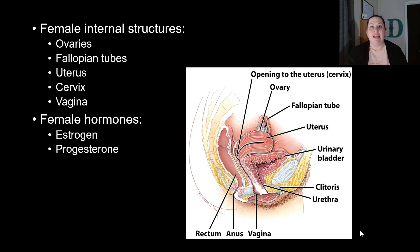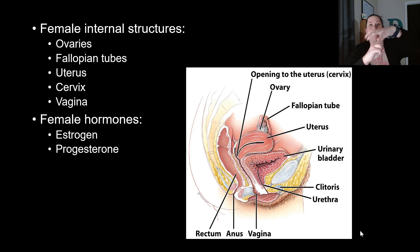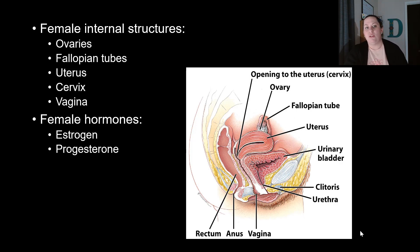Moving on to the internal structures of the female, we have the ovaries. The ovaries are the organs that produce the egg and several hormones. They are considered the female gonads. The fallopian tubes connect to and siphon the egg released by the ovary, directing it toward the uterus. They are not actually connected to the ovary — just next to it — so when the egg is released, the fallopian tube sucks it up like a vacuum and sends it toward the uterus.